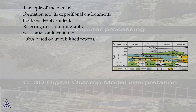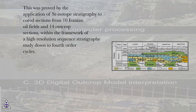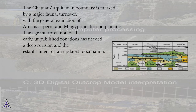The topic of the Asmari Formation and its depositional environments has been deeply studied. Referring to its biostratigraphy, it was earlier outlined in the 1960s based on unpublished reports. The application of isotopic stratigraphy has later proved that the sediments ascribed to the Miocene-Aquitanian are, in fact, late Oligocene Chattian in age. This was proved by SR-isotope stratigraphy applied to core sections from 10 Iranian oil fields and 14 outcrop sections. The Chattian/Aquitanian boundary is marked by a major faunal turnover, with the general extinction of Archaias species and Miogypsinoides complanatus. The early unpublished zonations required deep revision to establish an updated biozonation.